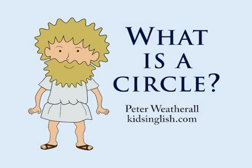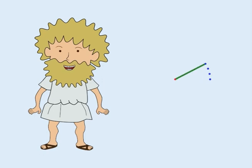What is a circle? A circle is a shape in geometry made up of all the points in a plane which are the same distance from a central point.